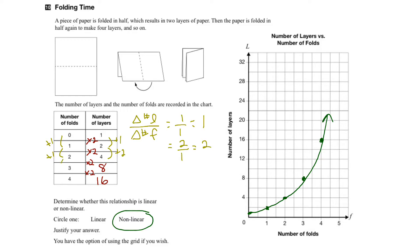Continuing on, the change in folds is again plus one, and the change in layers is plus four, so the rate of change is four divided by one, or four. And finally, the change in folds is plus one and the change in layers is plus eight, so that's eight divided by one, or eight. We can see right away that these rates of change are not constant, so since the rate of change is not constant, therefore the relationship is non-linear.